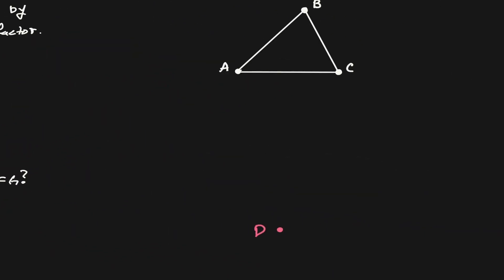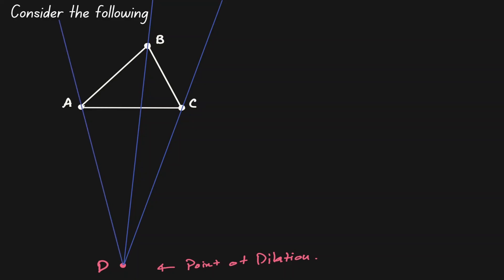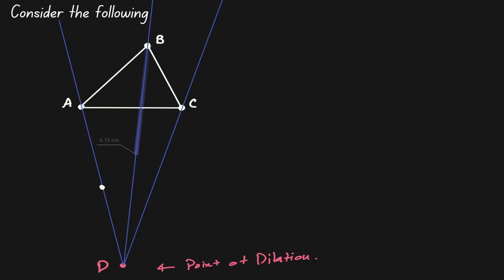Let's take a look at another example. Let's consider D to be our point of dilation, and let's draw lines from point D to points C, B, and A. The distance from A to D is about 10 cm — let's half that distance, so let's create a new point at 5 cm. The distance from B to D is about 14 cm — let's cut that in half and create a new point at 7 cm. The distance from C to D is about 10 cm — let's cut it in half and create a new point at 5 cm. Now let's connect those points and call the new triangle FEG.